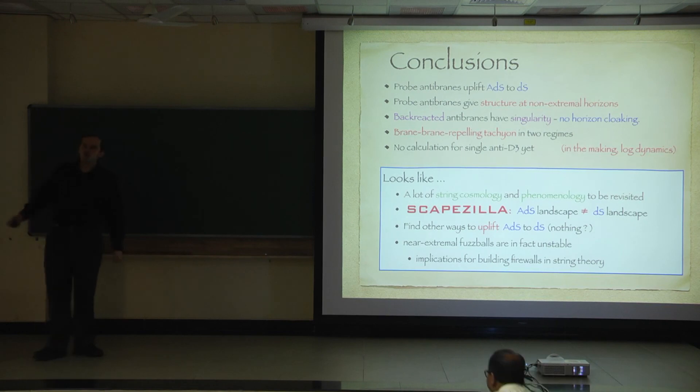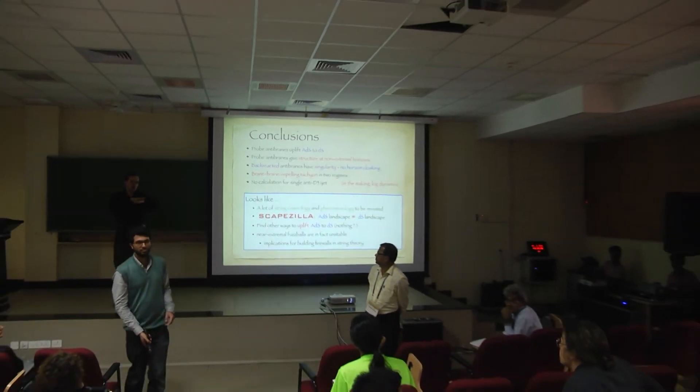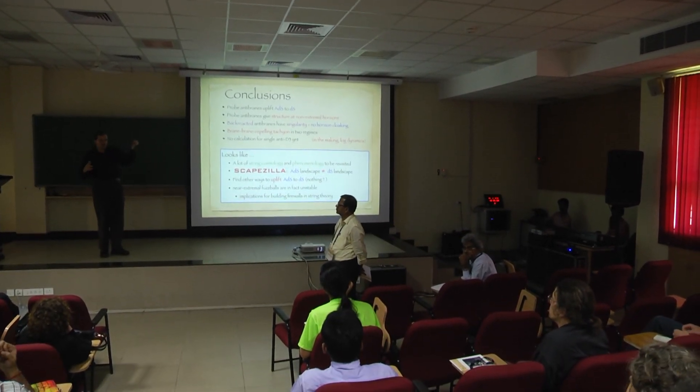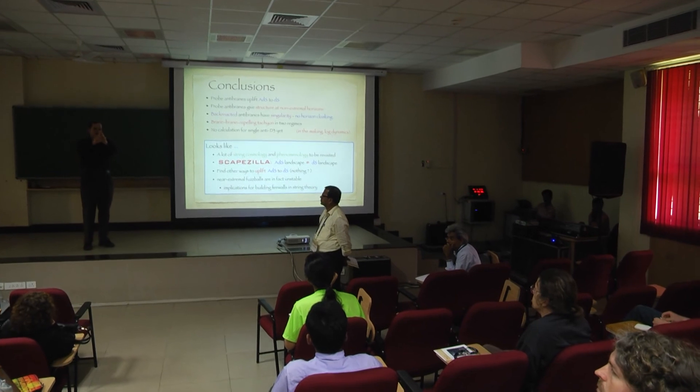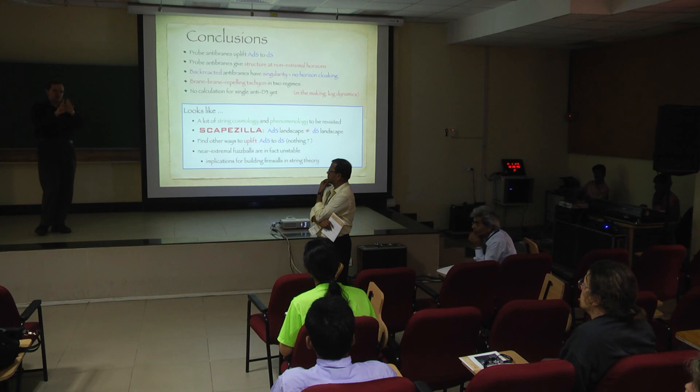It's a Coulomb-branch tachyon. Normally when you have a supersymmetric solution, you can move branes anywhere you want. But when you have this particular pattern of supersymmetry breaking, the string stretching between two branes just gets a negative mass, so the branes rush at each other.